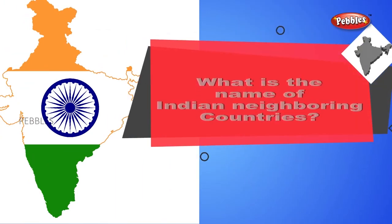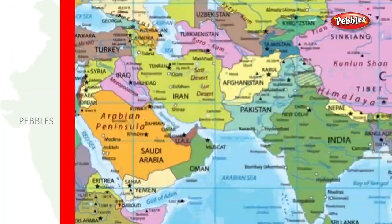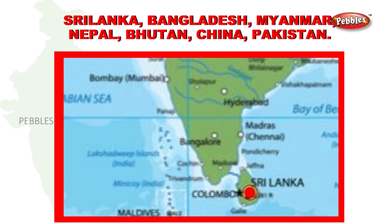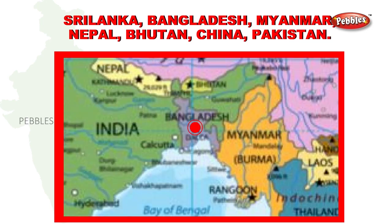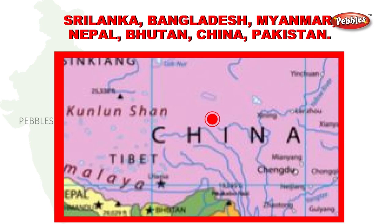What is the name of India's neighboring countries? Sri Lanka, Bangladesh, Myanmar, Nepal, Bhutan, China, and Pakistan.